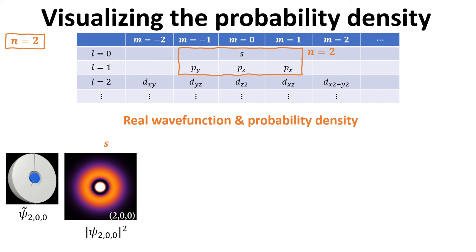Next, let's proceed to the n equals 2. In this case, we have total of 4 orbitals, 1 s orbital and 3 p orbitals. In this case, the wave functions are in general complex. For the complex wave function, we plot instead the probability density, which is modulus square of the wave function.